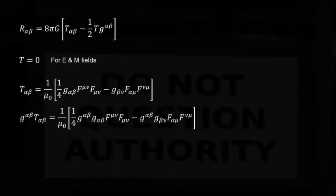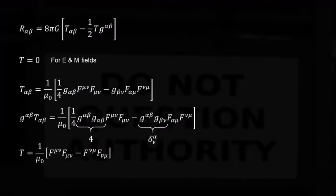We can make a further simplification by realizing that for the electromagnetic energy momentum tensor, T is 0. Recall what T alpha beta is for the EM field. You can find this formula on Wikipedia and many other sources. Now, multiply by the inverse metric. This is again 4, and this is Kronecker delta alpha nu. So, the two terms cancel out and the Einstein's field equations reduce to this.